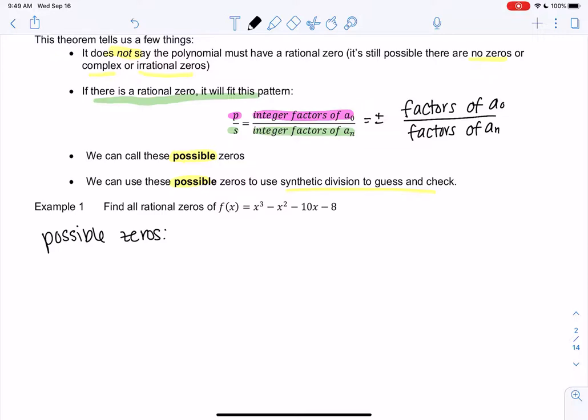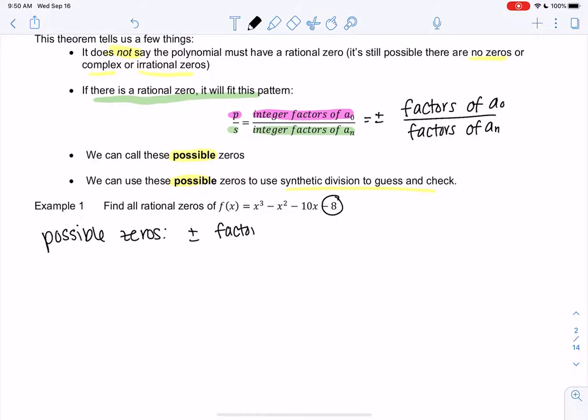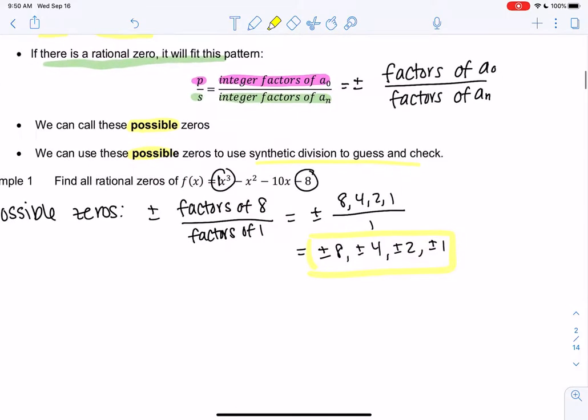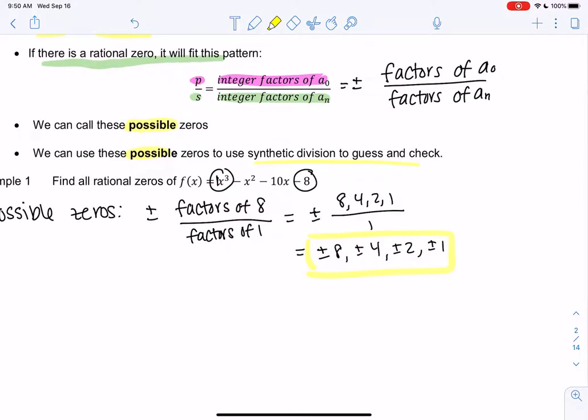So we're going to take factors of a0. So we have x cubed minus x squared minus 10x minus 8. So we're going to take factors of 8. I'm going to put the plus or minus on the outside divided by factors of just 1 since there's no coefficient. So that'll be plus or minus. And then factors would be like 8, 4, 2, and 1 because those all go into 8. And then the only factor for 1 is 1. And so then we just kind of divide. So we have plus or minus 8, plus or minus 4, plus or minus 2, plus or minus 1. So this tells us that if we were to have a rational zero, meaning not complex or not irrational, then it will be one of these 8 numbers.